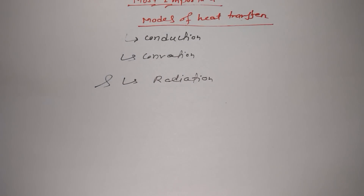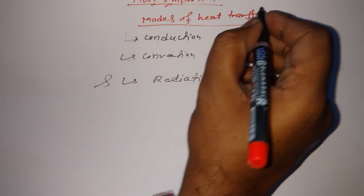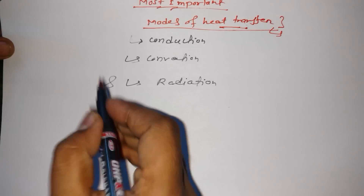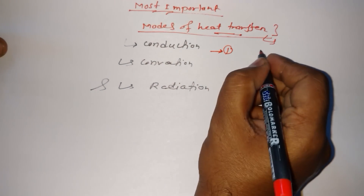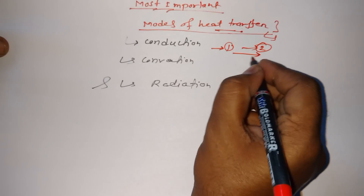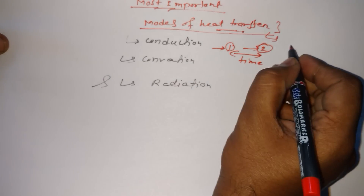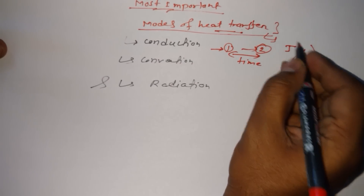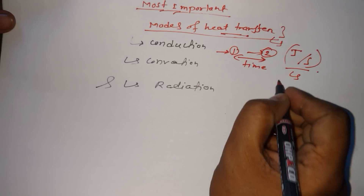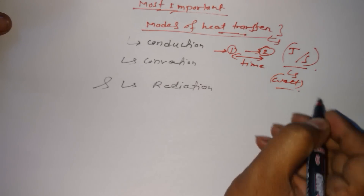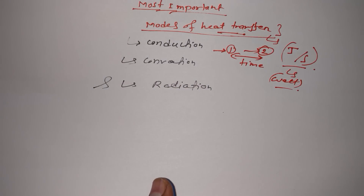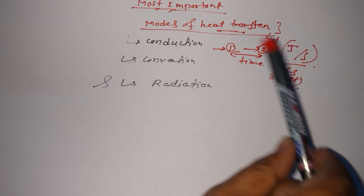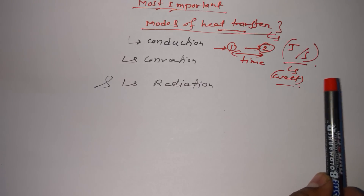There are three modes of heat transfer. What we are going to consider here is how much heat is transferring from one place to another place, and in how much time. That means heat energy — the unit of energy is joule — and per second, so the unit would be in watts only. If you are preparing for any competitive examination, you have to know this: the unit of any mode of heat transfer is always in watts.